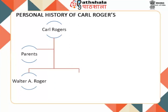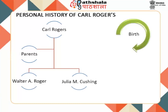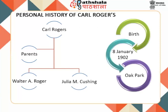Carl Rogers was born to Walter A. Rogers, a civil engineer, and his mother Julia M. Cushing, a homemaker and devout Pentecostal Christian. Carl was the fourth of their six children, born in Oak Park, Illinois, in 1902 on January 8th. He had two older brothers, a sister, and two younger brothers. Rogers was intelligent and could read well before kindergarten, so his education started in the second grade. He had a close relationship with his mother, who taught him to read at about age 4.